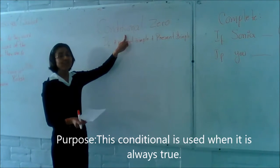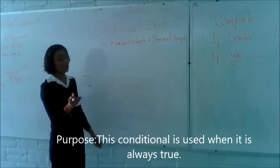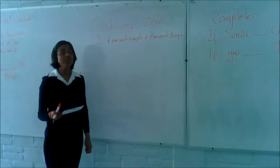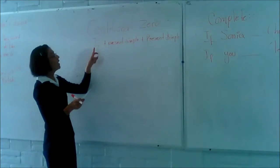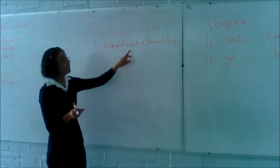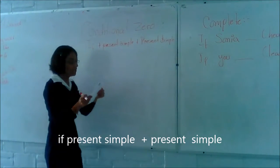Conditional zero is used to express something which is always true. The formula is: if + present simple + present simple. For example,